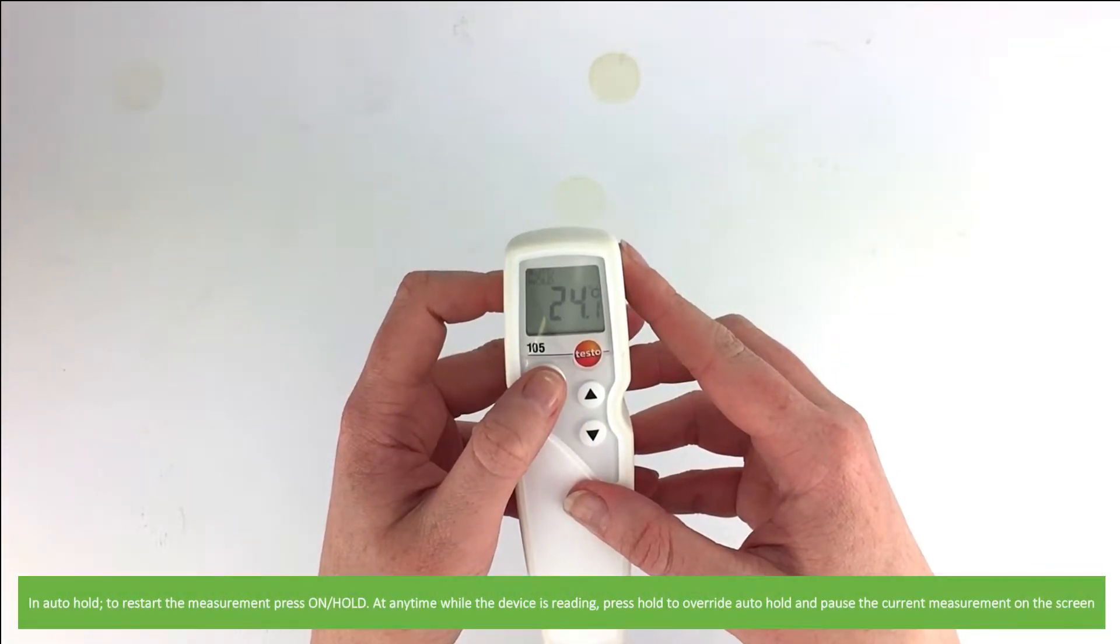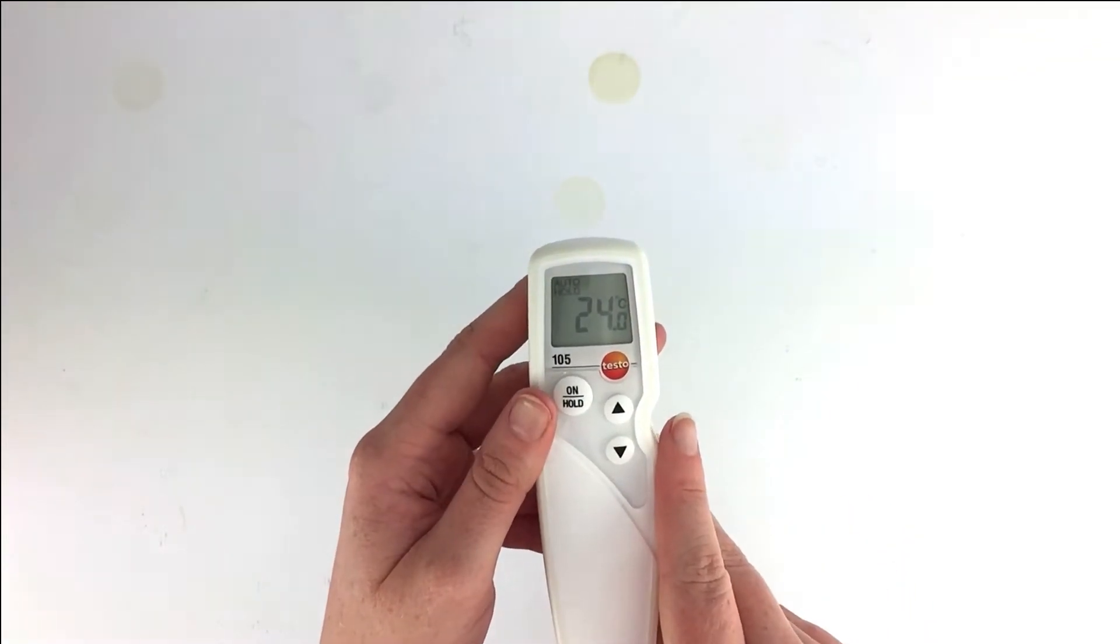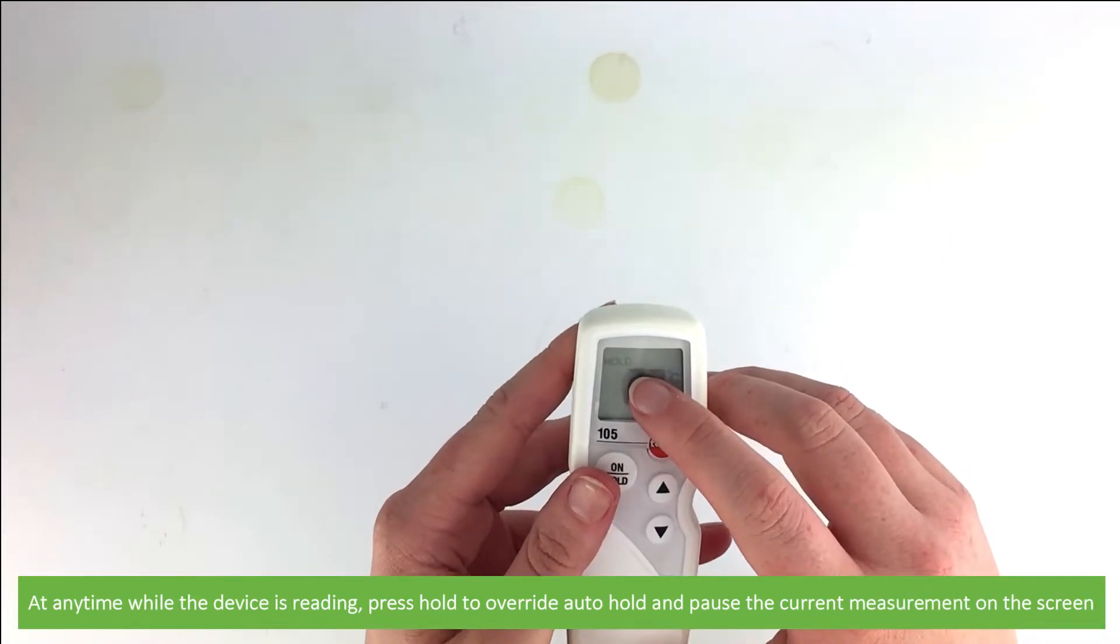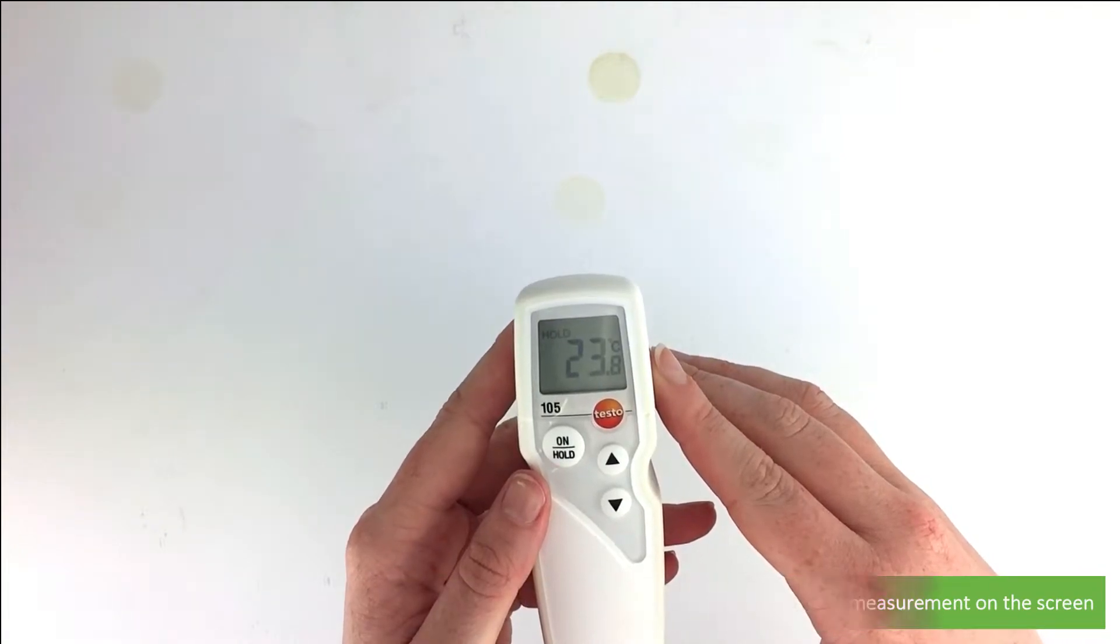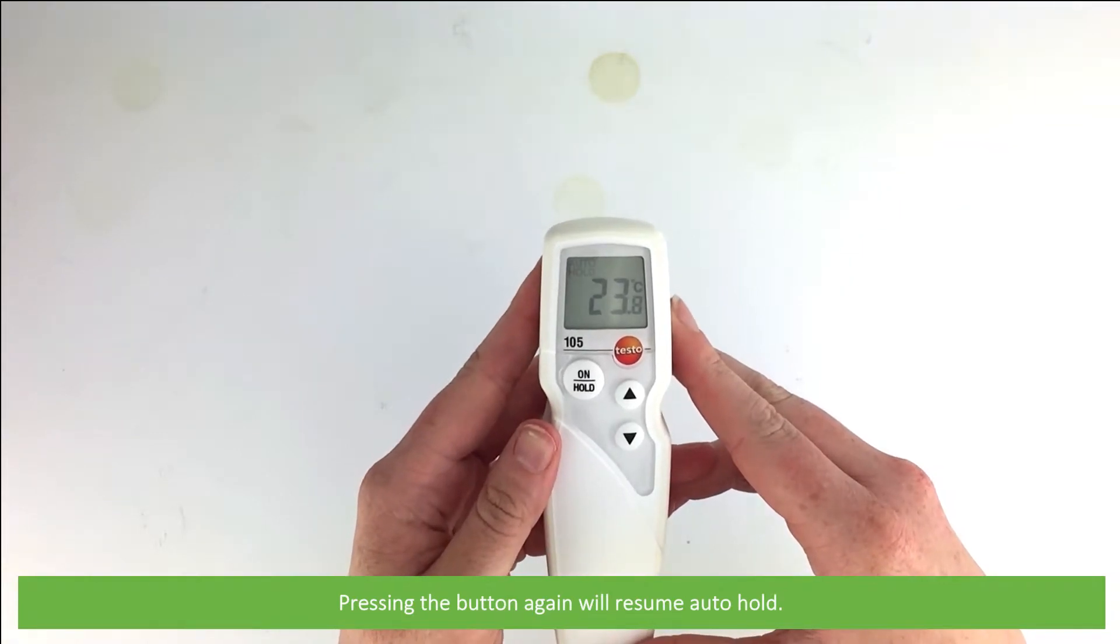In auto hold, to restart the measurement, press on hold. At any time while the device is reading, press hold to override auto hold and pause the current measurement on the screen. Pressing the button again will resume auto hold.